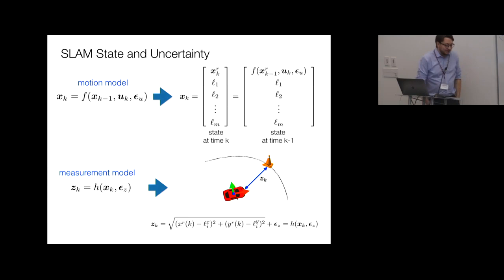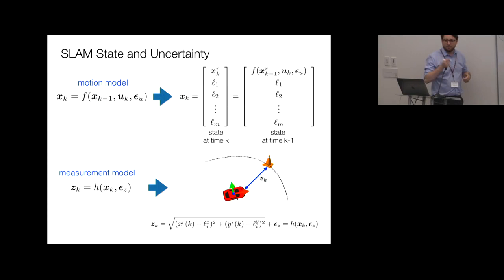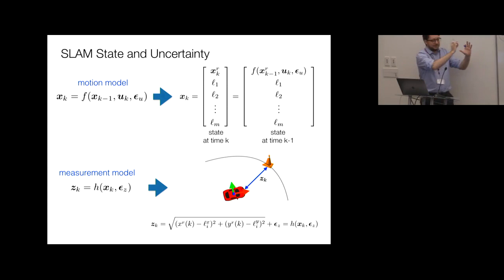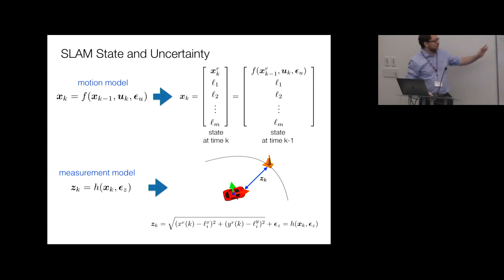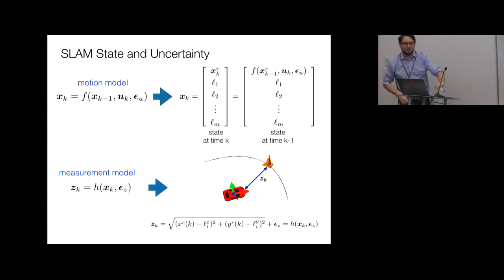An important related problem is data association — a fundamental and less-solved problem for real robotic applications. Given a measurement z_k, for example a pixel in an image, how do you determine if it corresponds to landmark i or landmark j? Or if using objects as landmarks, how do you tell if you're measuring chair 1 or chair 2? This data association problem is more fundamental than much of the estimation infrastructure being described.